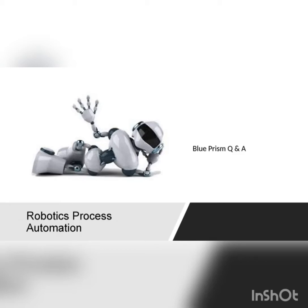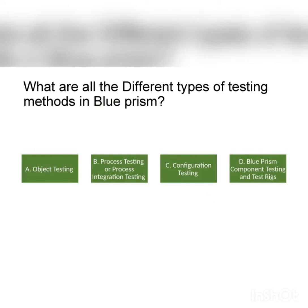Today we are going to discuss some Blue Prism testing methods. There are four types: object testing, process testing, integration testing, configuration testing, and component testing tricks.